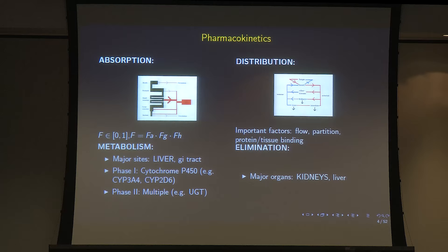The drug then has to distribute to a site of action. It's also metabolized, mainly in the liver but also in other places, and then eliminated — usually by the kidneys. Water-soluble metabolites are eliminated by the kidneys, with some hepatic elimination as well.